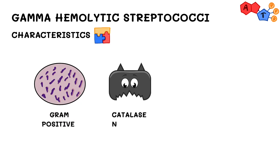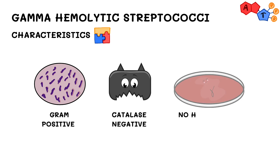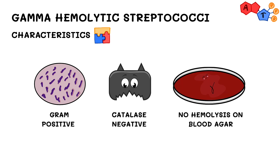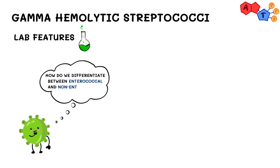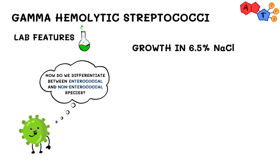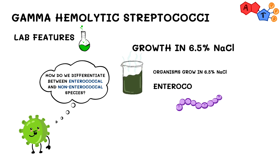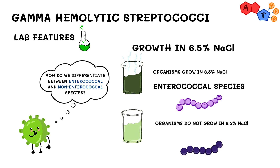Gamma hemolytic strep are gram positive and catalase negative. Gamma hemolytic organisms show no hemolysis on blood agar, but both the enterococcal and nonenterococcal species show gamma hemolysis — so how can we differentiate between them? The answer is by using 6.5% sodium chloride (NaCl). If the organism grows in sodium chloride, then it's enterococcal; if no growth occurs, then it's nonenterococcal — in other words, strep bovis.